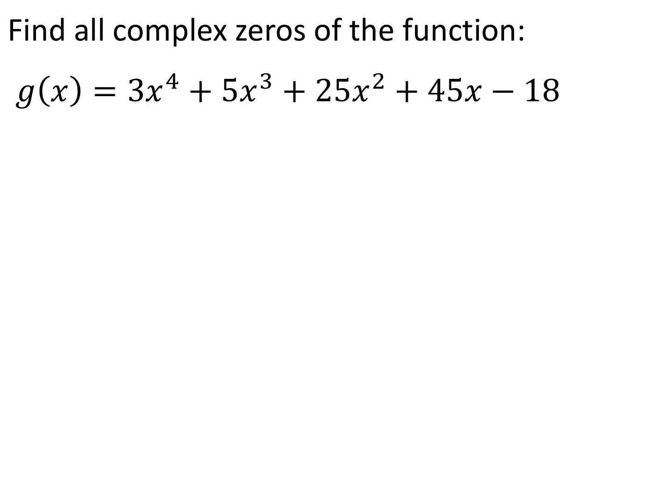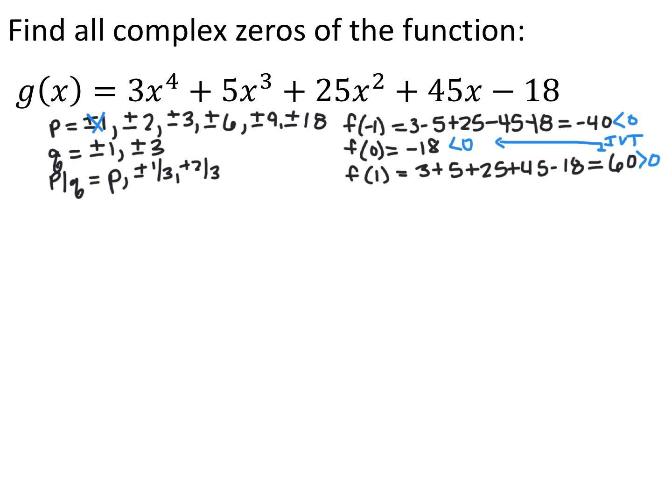For our next polynomial, g of x equals 3x to the fourth plus 5x cubed plus 25x squared plus 45x minus 18. It's a degree 4 polynomial, which means it's going to have exactly four zeros. It doesn't factor by grouping or any other special way, so I'm going to find all possible rational zeros the same way we did in 4.2. I'll go with the assumption that I have at least some rational zeros, and that will help me find my other zeros later on. So I set up my p's and q's: the p's are factors of negative 18, giving plus or minus 1, 2, 3, 6, 9, and 18. The q's are factors of 3, giving plus or minus 1 and 3.